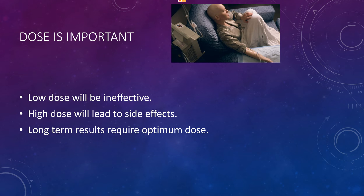Let's begin. With any treatment, dose is important for the treatment of cancer. If we give a low dose, it will be ineffective — it will not take care of all the cancer cells, and the cancer will not go away, or if it goes away it will come back sometime down the line, maybe one, two, or three years after treatment. A high dose, on the other hand, will lead to unnecessary side effects, so that also needs to be avoided.